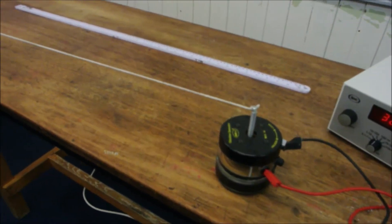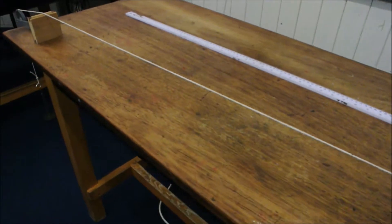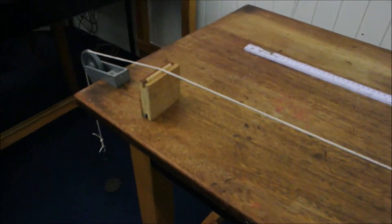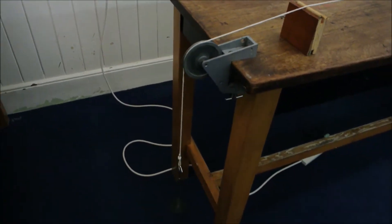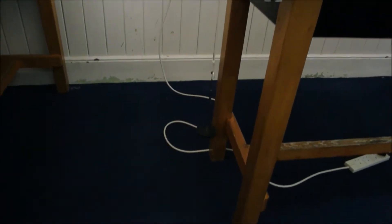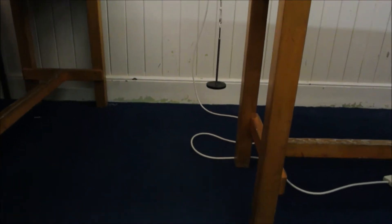So here we have a signal generator attached to a vibrating post, and that has a piece of string running from it which goes across this piece of wood, and then a tension is provided in the string by this mass which is just hanging down here. We can't really see it very well. There we are.